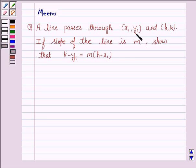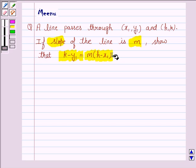A line passes through x1, y1 and h, k. If the slope of the line is m, show that k minus y1 is equal to m into h minus x1.